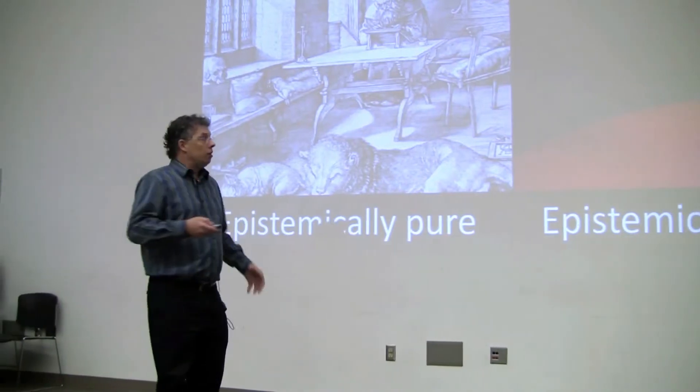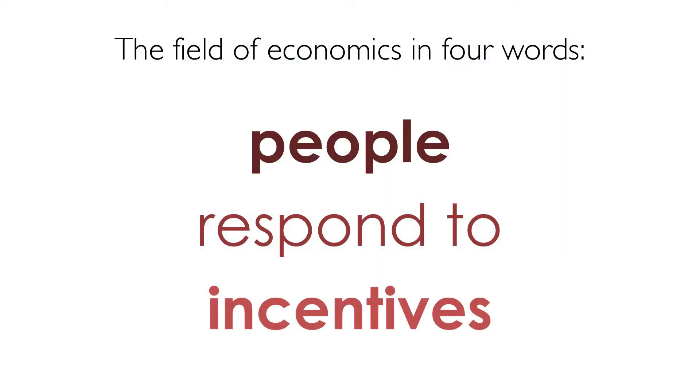So I mean, we can take kind of an economic view of why scientists do what they do. The field of economics is really easy to summarize in four words, right? People respond to incentives. So all we have to do is understand what are the incentives that scientists are facing, and then we can understand a lot about why they behave the way they do.